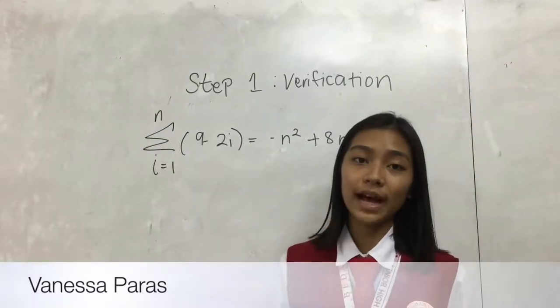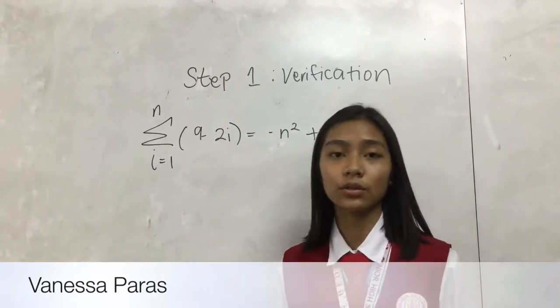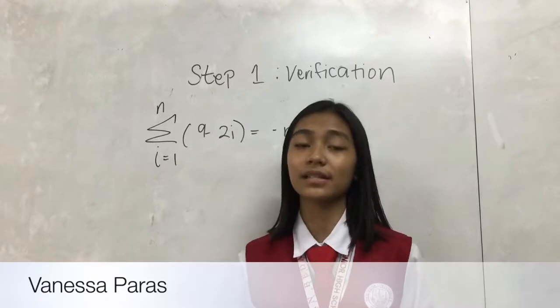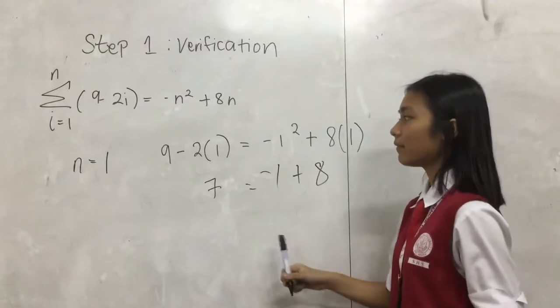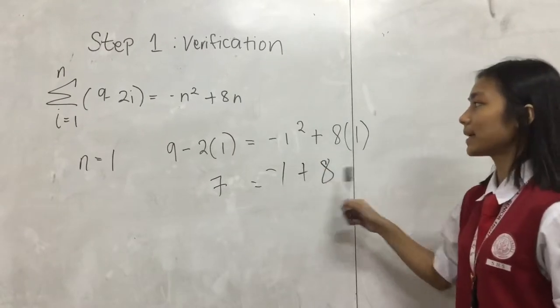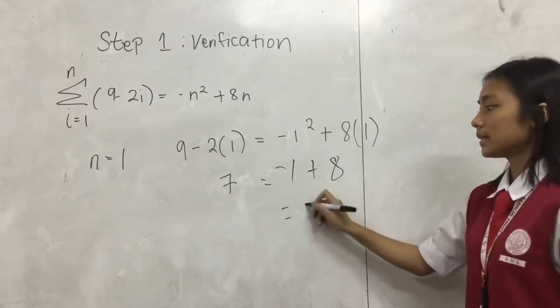Verification: To prove that the equation is true, in verification we must substitute the variables with numbers starting with 1. When n equals 1, we get 7, while negative 1 squared plus 8n times 1 equals 7.